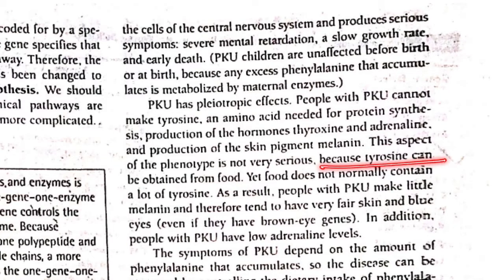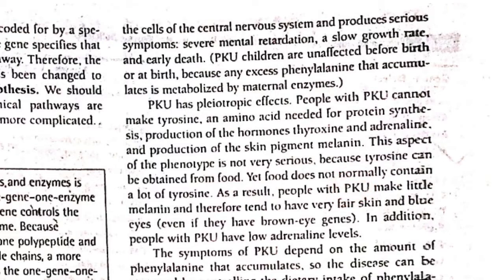Because tyrosine can be obtained from food, this aspect of the phenotype is not very serious. However, food does not normally contain a lot of tyrosine. As a result, people with phenylketonuria make little melanin and therefore tend to have very fair skin and blue eyes,